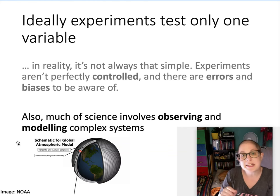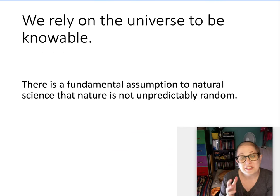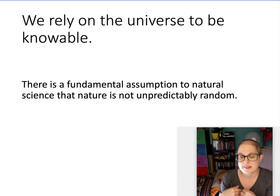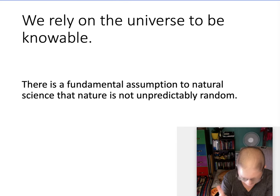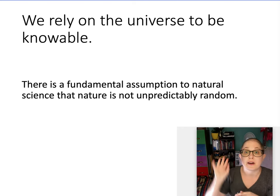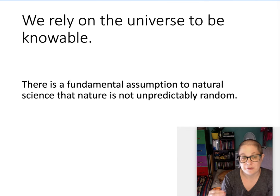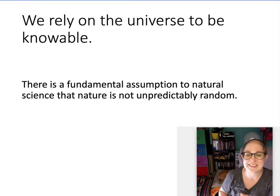This graphic shows an actual computer model where they have little cells and do all the mathematics of what's happening to the atmosphere in those cells. One thing this relies on — that science relies on — is an assumption that the universe is knowable, that nature is not unpredictably random. That's not something we can necessarily prove, because all you need is one exception to throw the whole thing off. But we go with the assumption that the universe is knowable. We've built a lot based on the science we have, but it's important not to forget it does rely on a fundamental assumption that can't be proven.